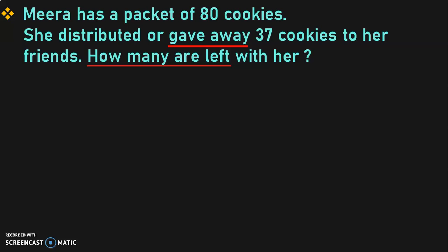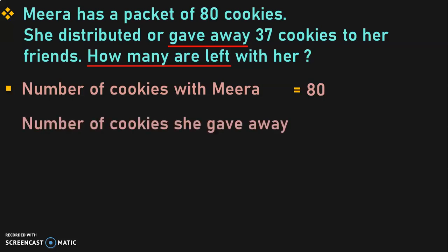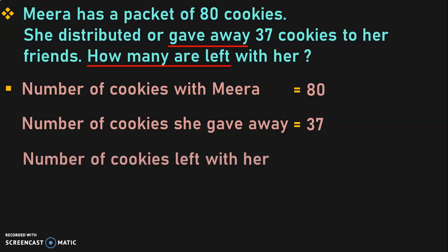The next step is to write down the statements. Number of cookies with Meera is equal to 80. Number of cookies she gave away is equal to 37. So, what do we have to find here? Number of cookies left with her is equal to 80 minus 37. Let us do the subtraction now.